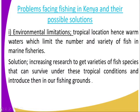The first problem is environmental limitation. Kenya is tropically located and its water bodies are warm. This limits the number and variety of fish in marine fisheries. The solution is to increase research to find varieties of fish species that can survive under tropical conditions and introduce them into our fishing grounds — specifically fish that do well in warm waters.